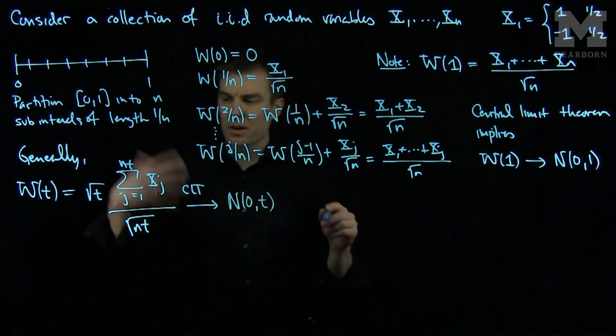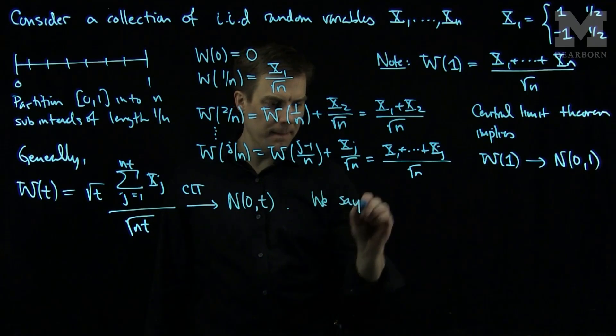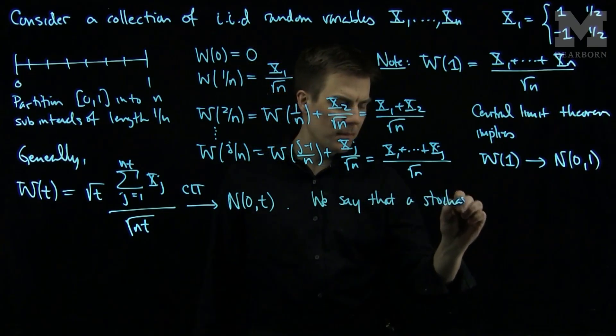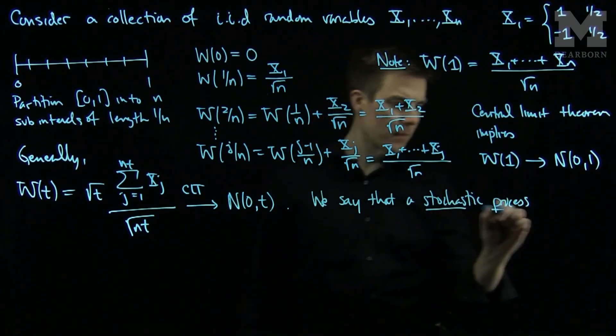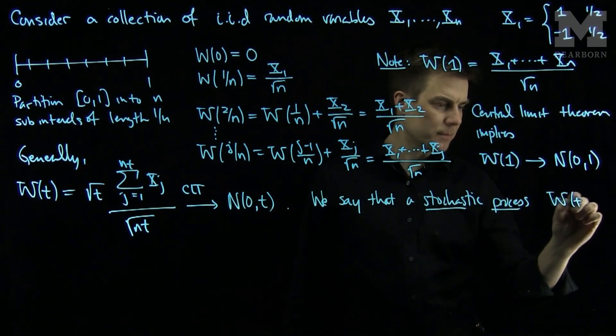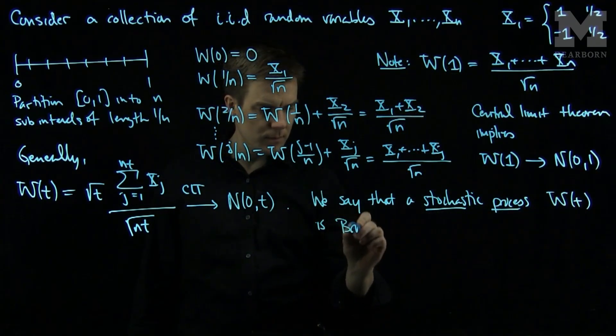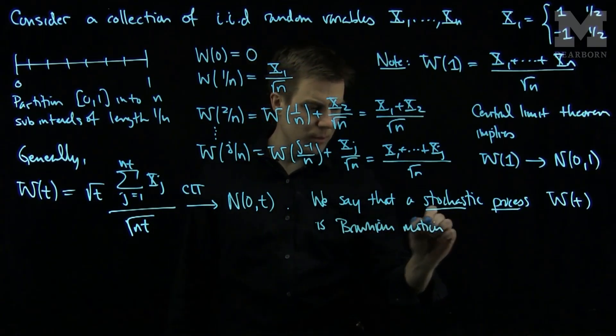So we'll see that the limit of this sequence, so we will say that a process wt is Brownian motion. We'll call it standard Brownian motion.